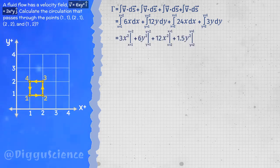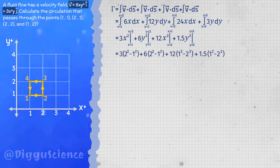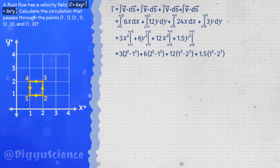I think this integration process is very easy. You can enter the upper and lower limits of integration. The result is plus nine, plus 18, minus 36, minus 4.5.